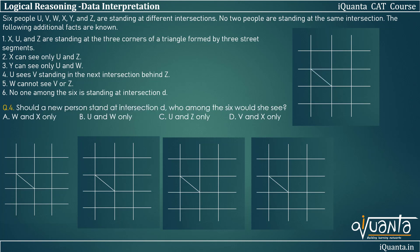The last question is: if a new person stands at intersection D, which of the six would she see? Using the only valid arrangement and placing someone at intersection D, she would be able to see W and X — only X and W. Option A is the correct answer. To summarize: you only need to find the valid arrangement and then answer all questions from it. I hope the solution is clear. Try this once by yourself — no special concept is required. If you have a doubt, please ask. Thank you.